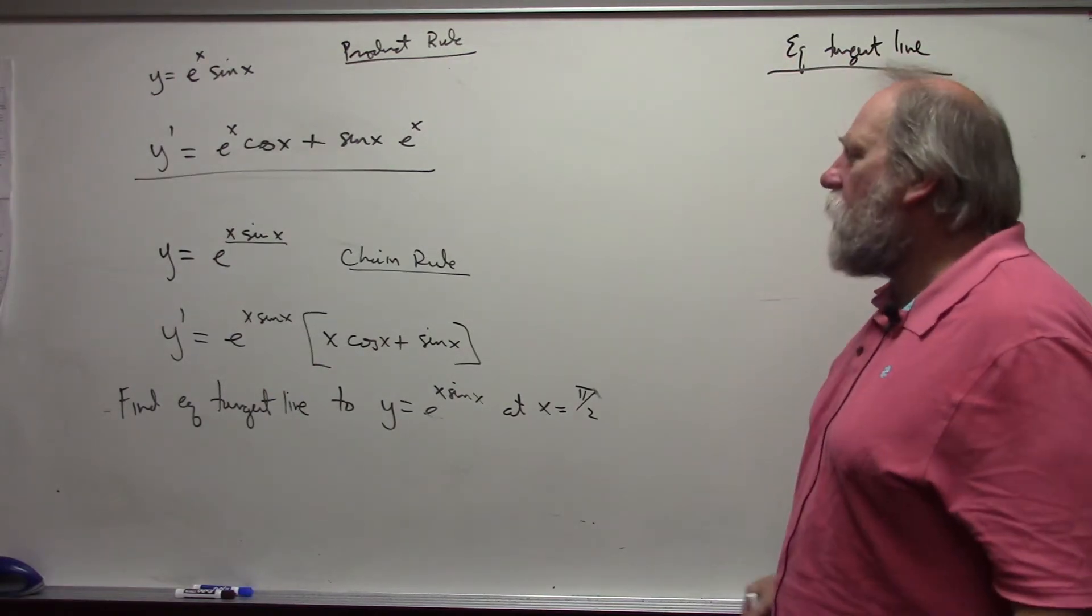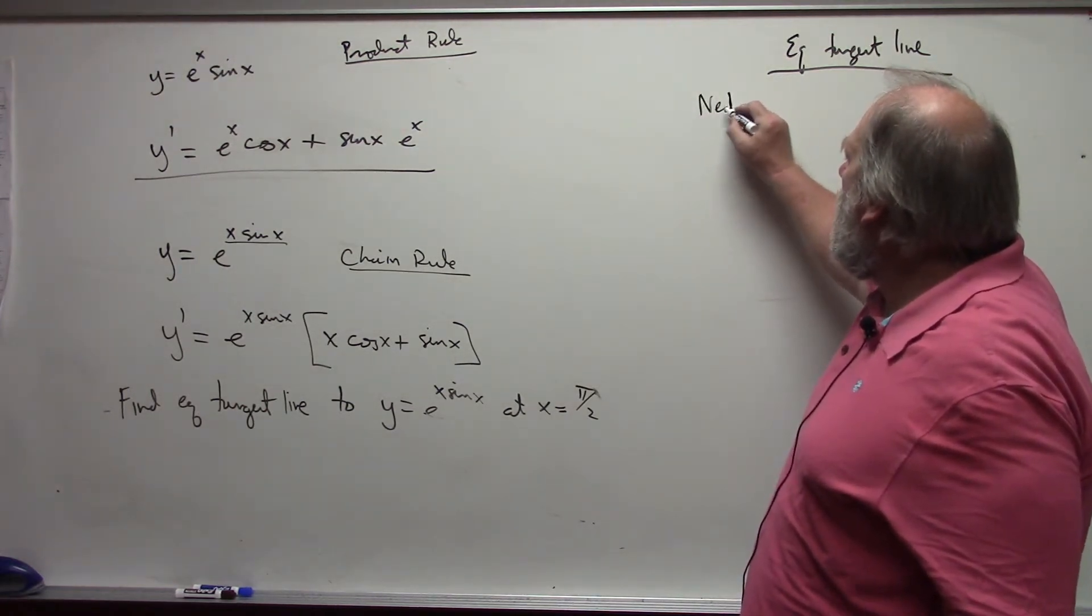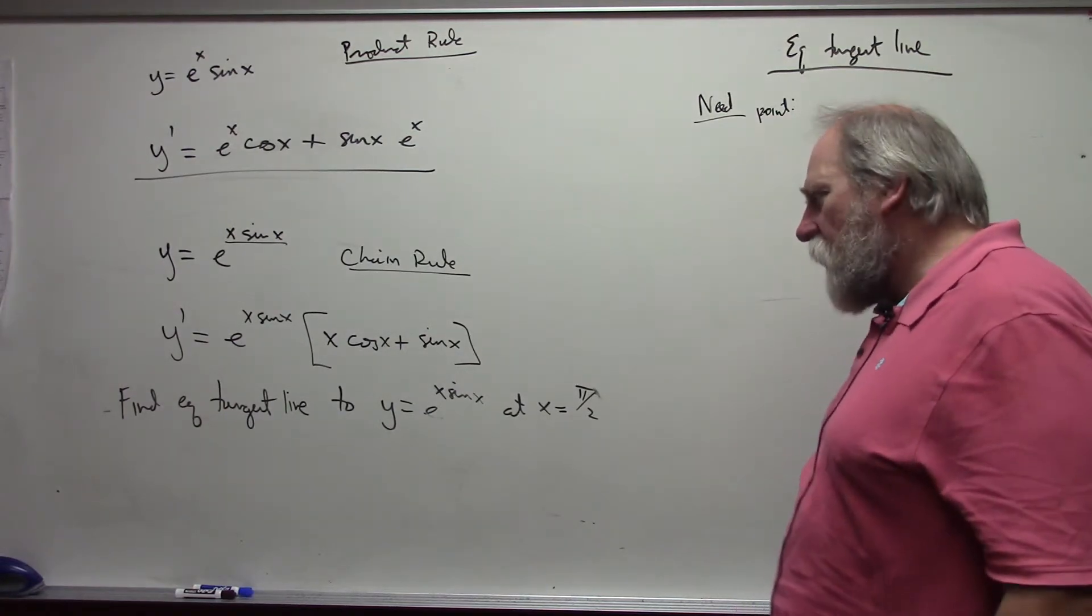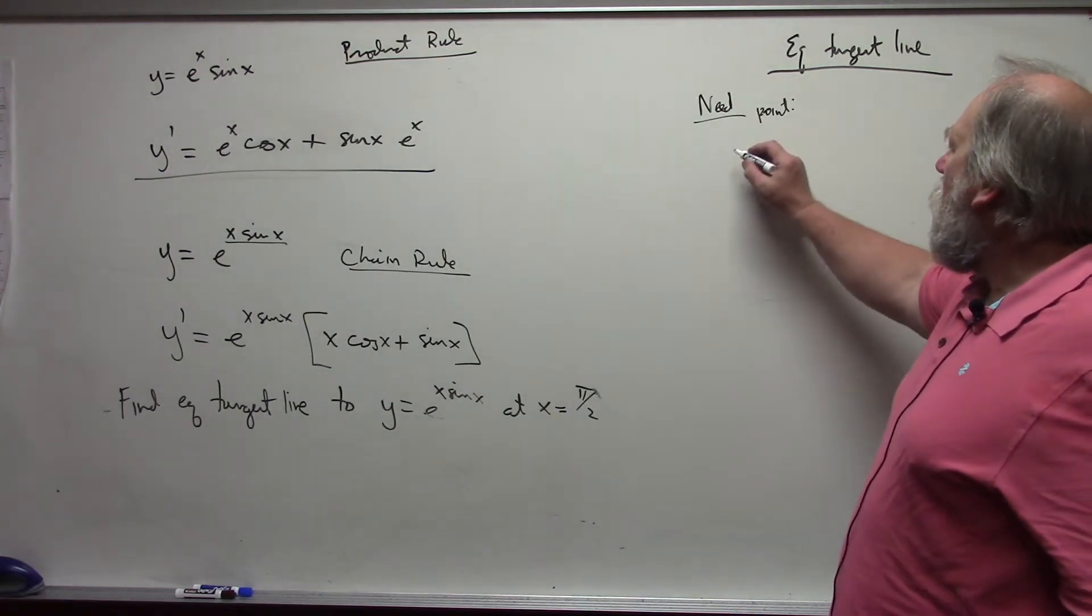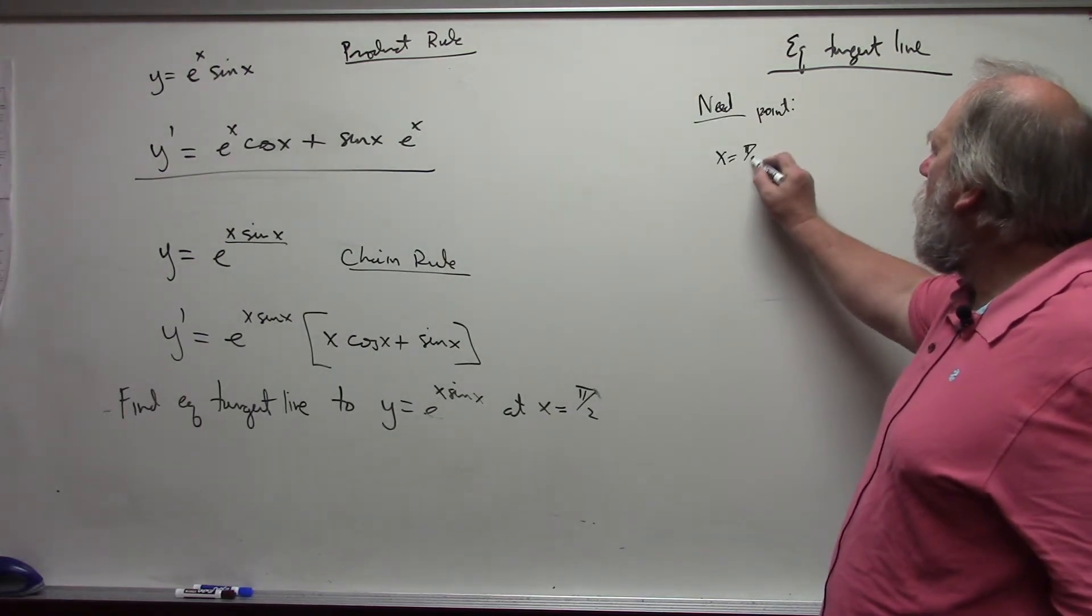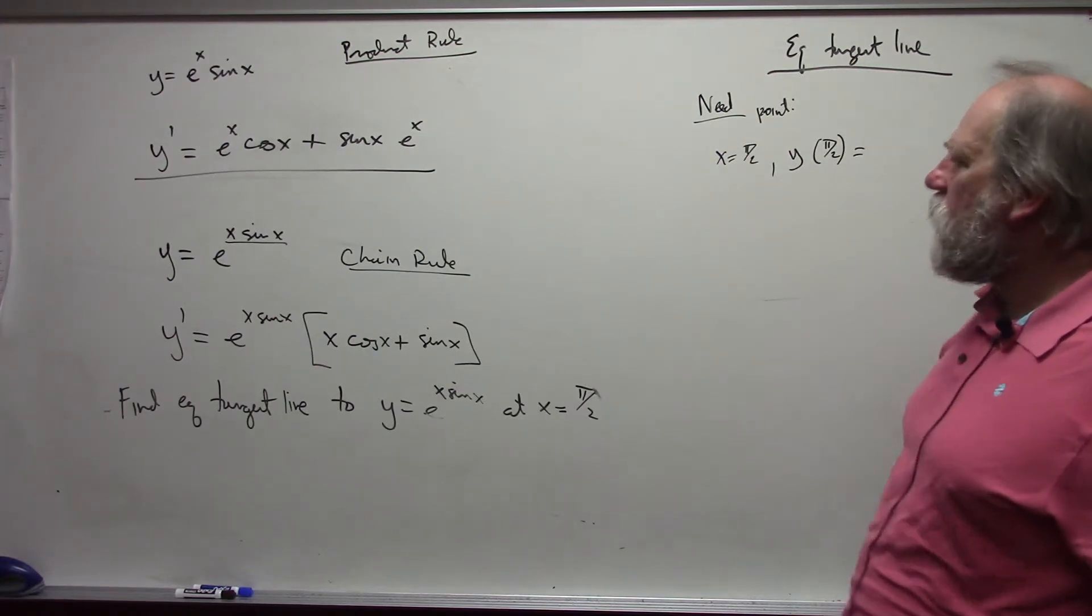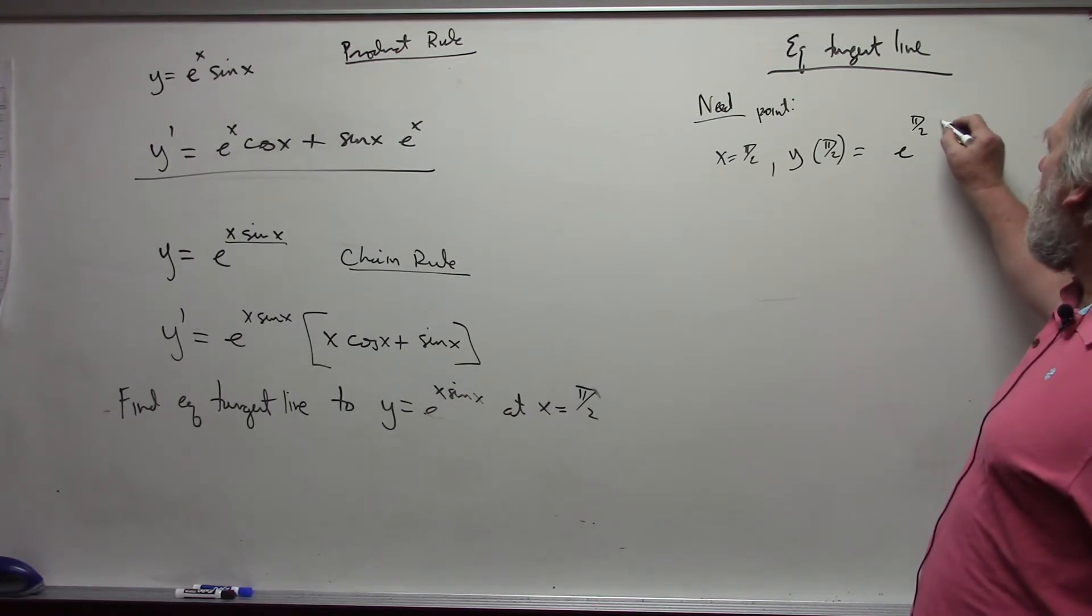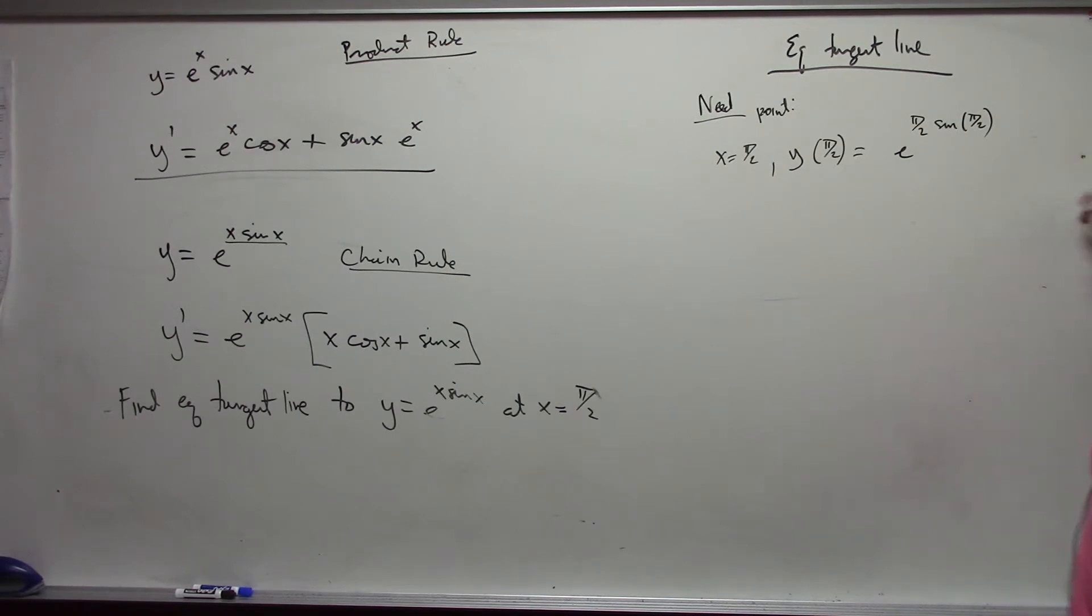We need one, the point that the line goes through. When x equals pi over 2, my y value at pi over 2 would be e to the pi over 2 times the sine of pi over 2. The sine of pi over 2 is just 1, and so this is e to the pi over 2.